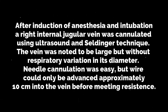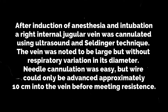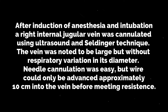After induction of anesthesia and intubation, the right internal jugular vein was cannulated using ultrasound and Seldinger technique. The vein was noted to be large but without respiratory variation in its diameter. Needle cannulation was easy, but the wire could only be advanced approximately 10 cm into the vein before meeting resistance.